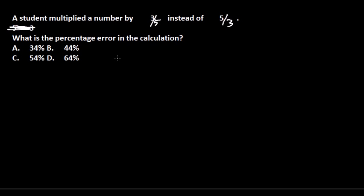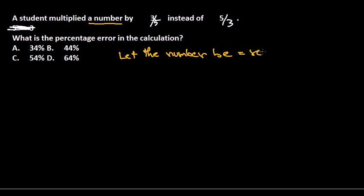You don't know the number, you don't know the percentage of error — we don't know the number. But if you know the number by which they multiply, whether 3/5 or 5/3, it will be easy. So just assume it — that's the math. Let the number be x.